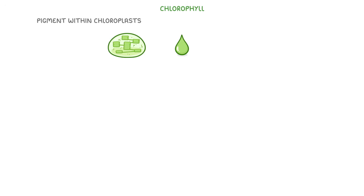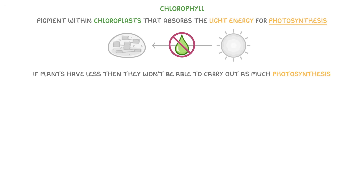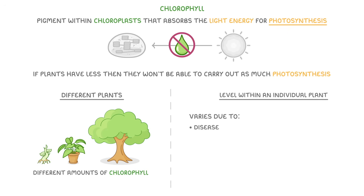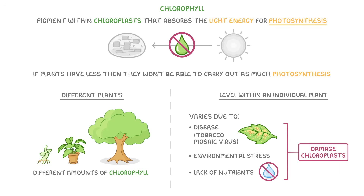Let's start with chlorophyll. Chlorophyll is the pigment within chloroplasts that absorbs the light energy needed for photosynthesis, so it makes sense that if plants have less of it they won't be able to carry out as much photosynthesis. Different plants naturally have different amounts of chlorophyll, but the level within an individual plant can vary due to disease — for example infection with tobacco mosaic virus — environmental stress, or lack of nutrients like water. All of these things tend to damage the chloroplasts, so they can't make as much chlorophyll anymore.